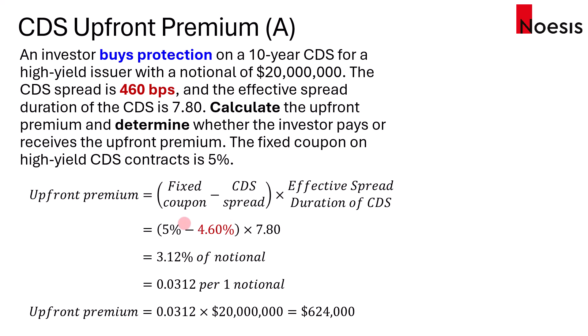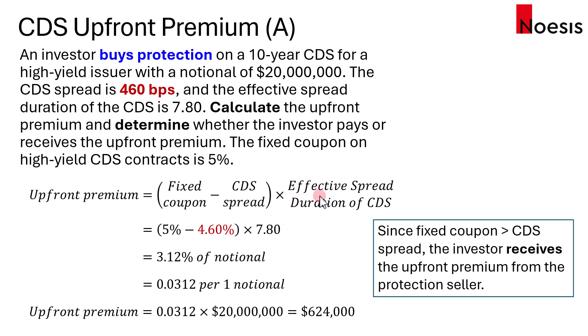Since it's imbalanced and not fair to the protection buyer, we need to balance it up. Therefore, the investor or protection buyer would have to receive the upfront premium from the protection seller to make it fair.